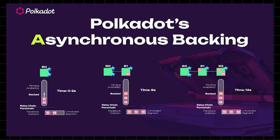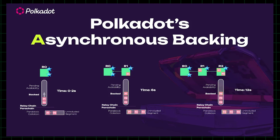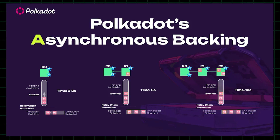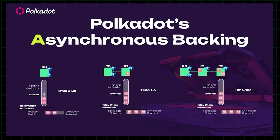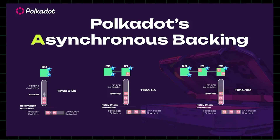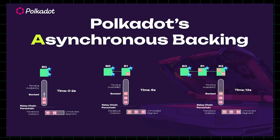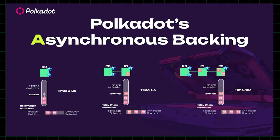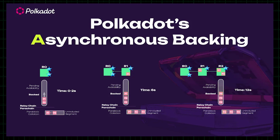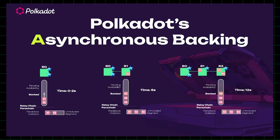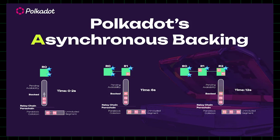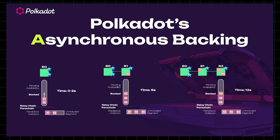It will also improve para block execution time, allowing for roughly four times more data per para block. After combining the 4x in execution time and 2x in para block throughput, thanks to a 50% latency cut, these improvements can increase the total throughput by 8 to 10x of where throughput used to be. This means the chain can process nearly 1000% more transactions per second.